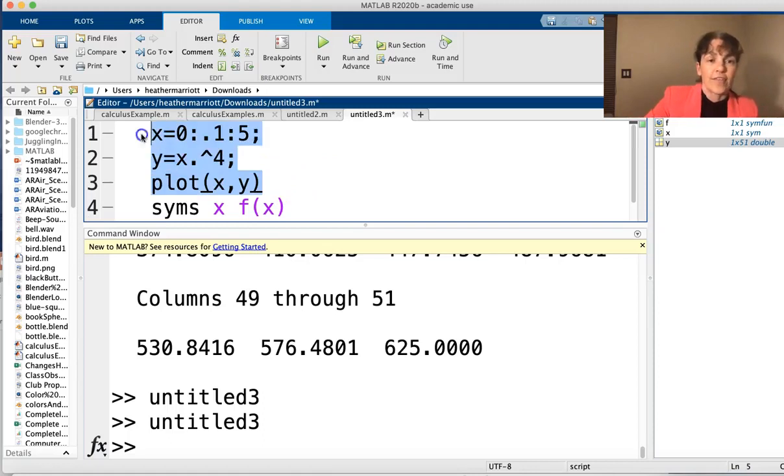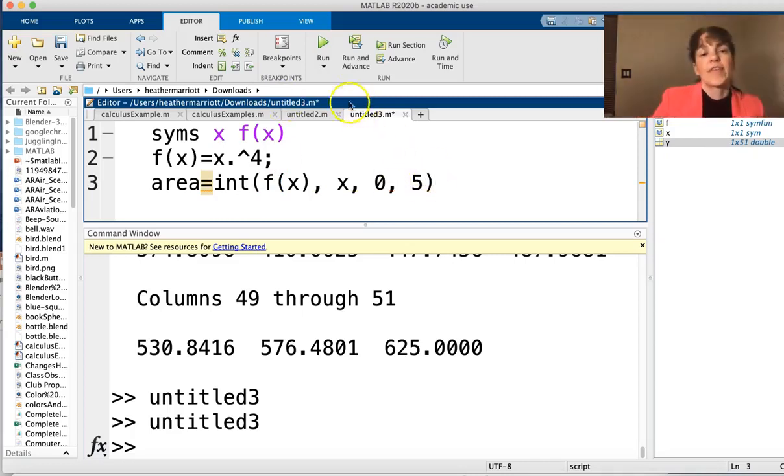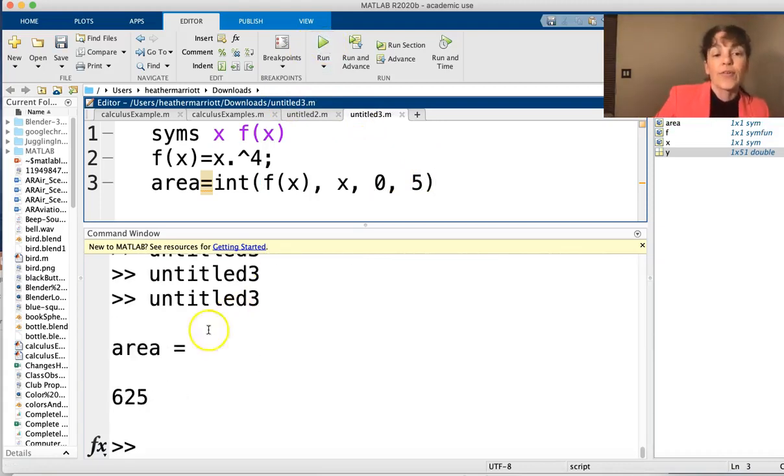And we don't really need this graphing part above. I was graphing it just so you could visualize it. So I'm just going to delete that. And we're going to start right here saying, here's our function. And now how do we integrate? Well, I'm going to store the result in area. So, because it's the area under that curve, and I'm going to say, I want to integrate and use this function. And I want to integrate using x with the minimum value of x being 0 and the maximum value of x being 5. And I'll leave off the semicolon. So it'll print that answer to the screen. And it does give me the same answer of 625.